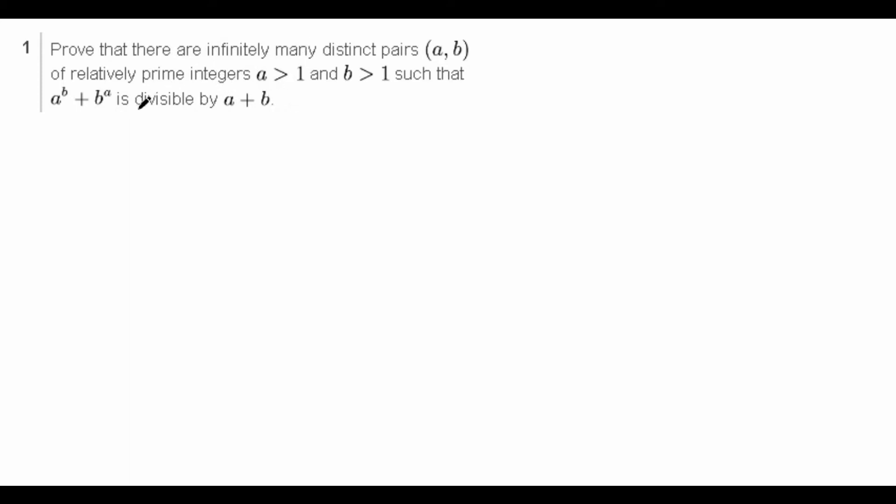So we have two conditions here, well three conditions. First we have a > 1, b > 1. We can see they simply said this because when we plug in a equals 1, it's just automatically divisible already because they're the same thing. So this condition makes sense.